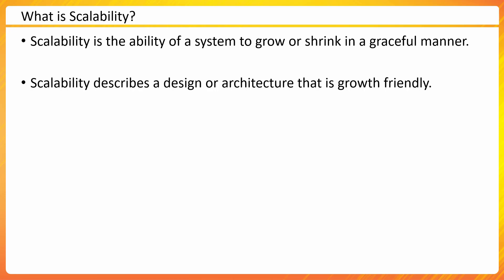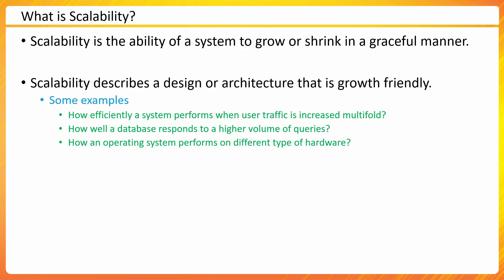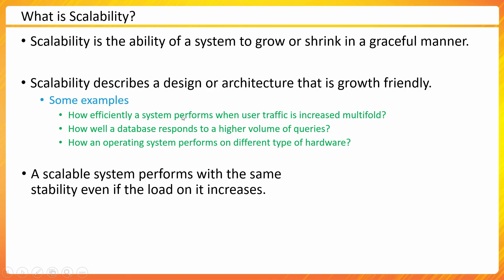Some examples in an IT context: how efficiently a system performs as user traffic increases multi-fold; how a database responds to a higher volume of queries; and how an operating system performs on different hardware — for instance, running on 4 GB RAM with 2 CPUs versus a large machine with 128 CPUs and 256 GB of RAM. A scalable system performs with the same stability even as load increases.